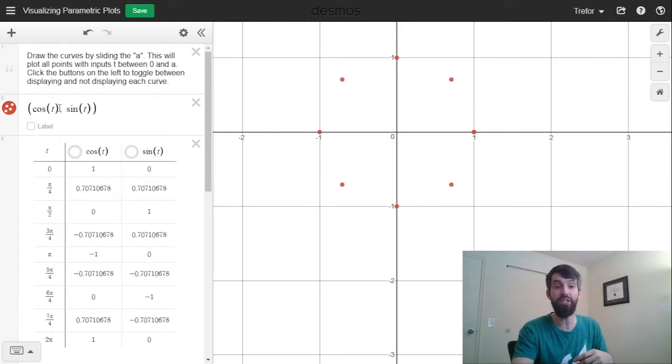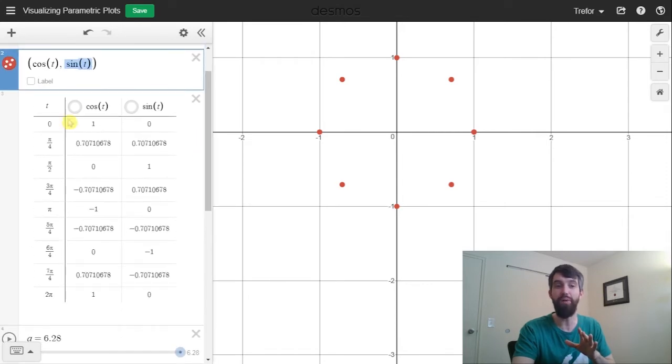That is, this is the parametric plot where the x-coordinate is given by cosine of t and the y is given by sine of t. And then what I've done is created a table of values where t can be standard numbers like 0, pi over 4, pi over 2, and so on.